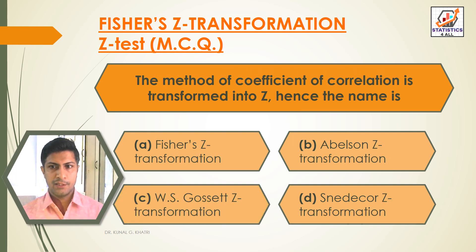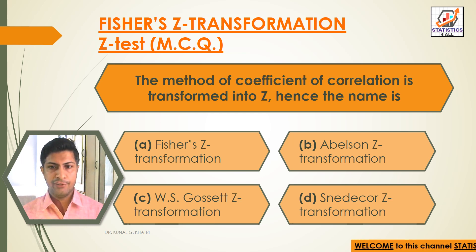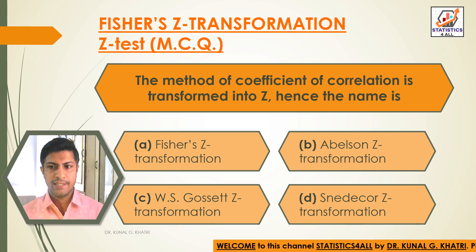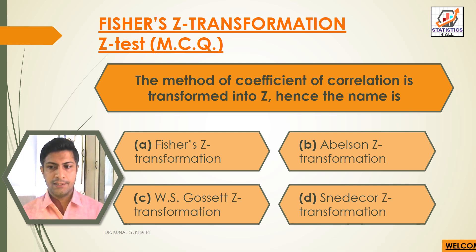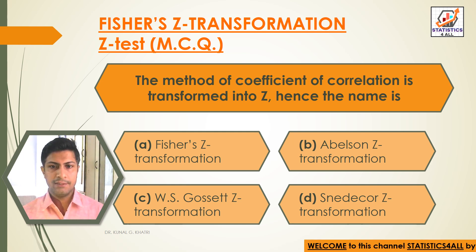Next question. The method of coefficient of correlation is transformed into Z; hence the name is: Option A: Fisher's Z-Transformation. Option B: Abelson's Z-Transformation. Option C: W.S. Gossett's Z-Transformation. Option D: Snedeker's Z-Transformation.